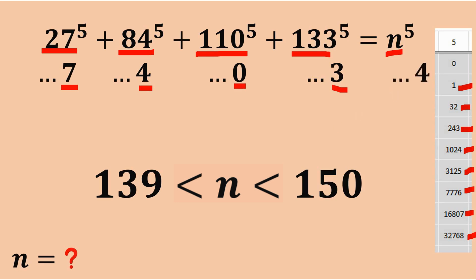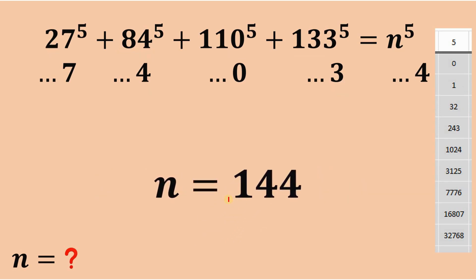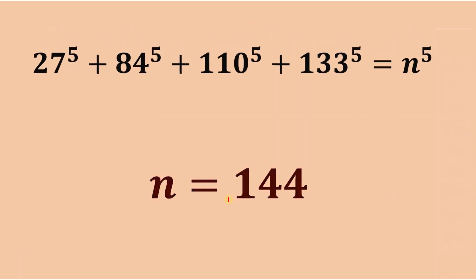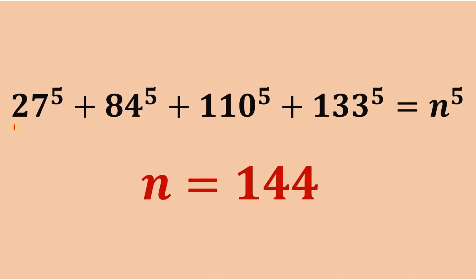Among the possible values of n from 140 to 149, the only one that ends in 4 is 144. Therefore, n equals 144, and this is our answer. We can confirm: 27 raised to the fifth power plus 84 raised to the fifth power plus 110 raised to the fifth power plus 133 raised to the fifth power equals 144 raised to the fifth power. And as always, we are done.